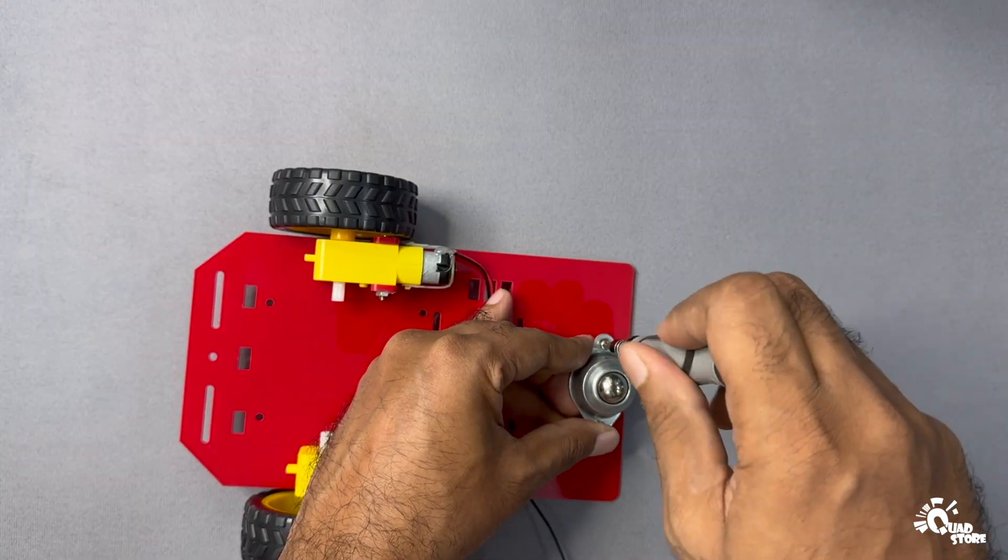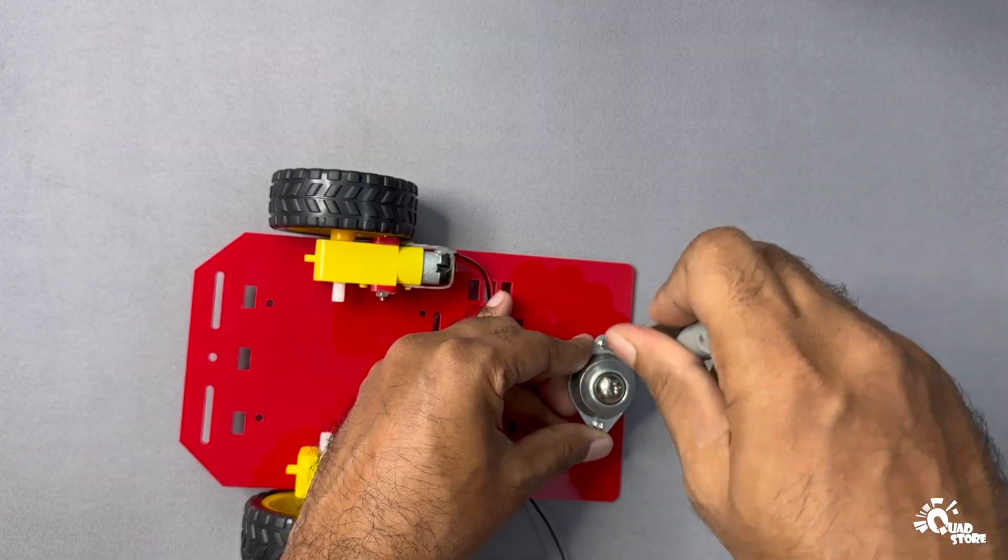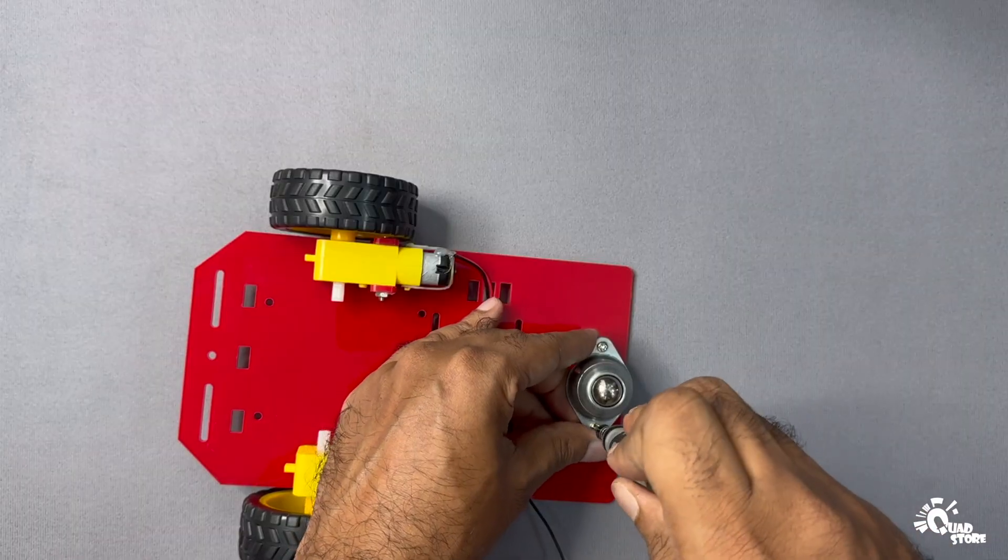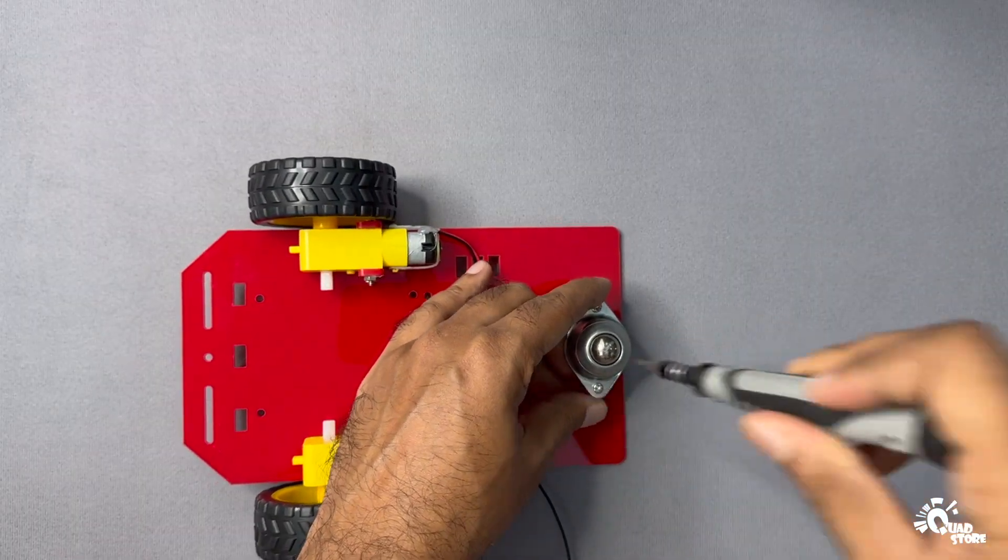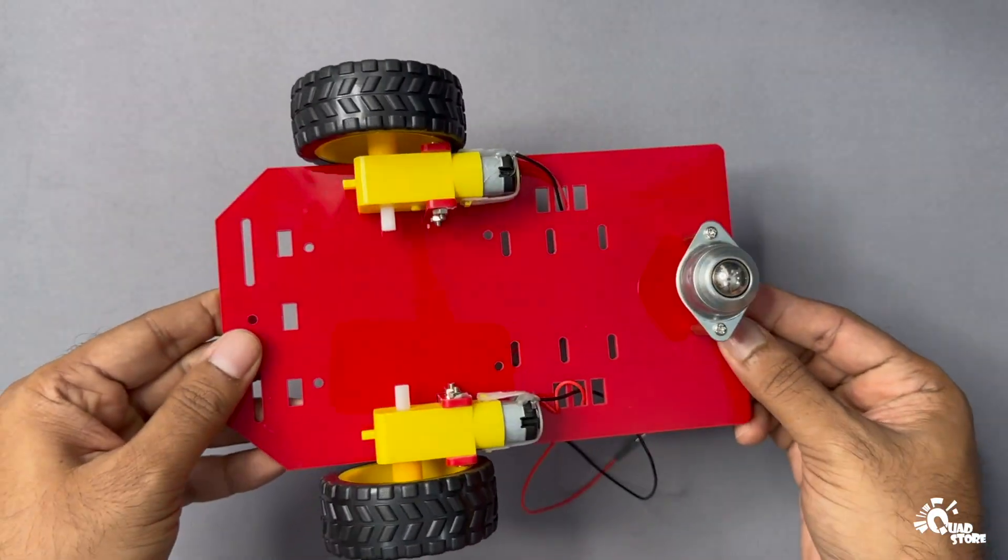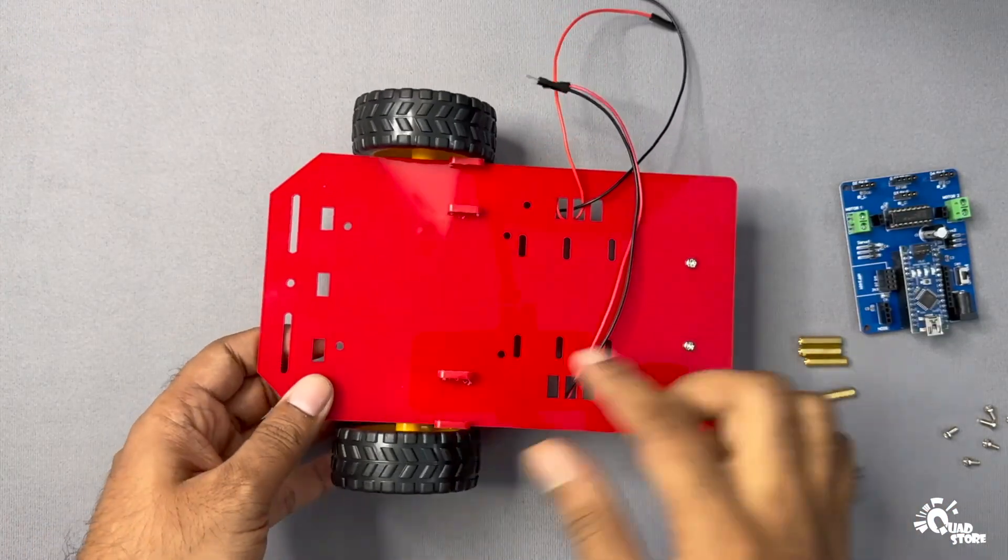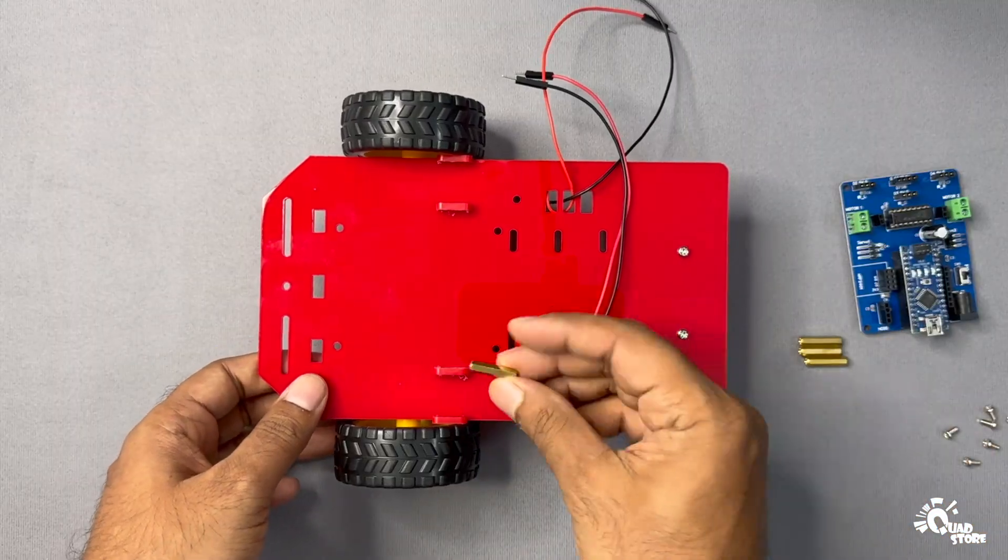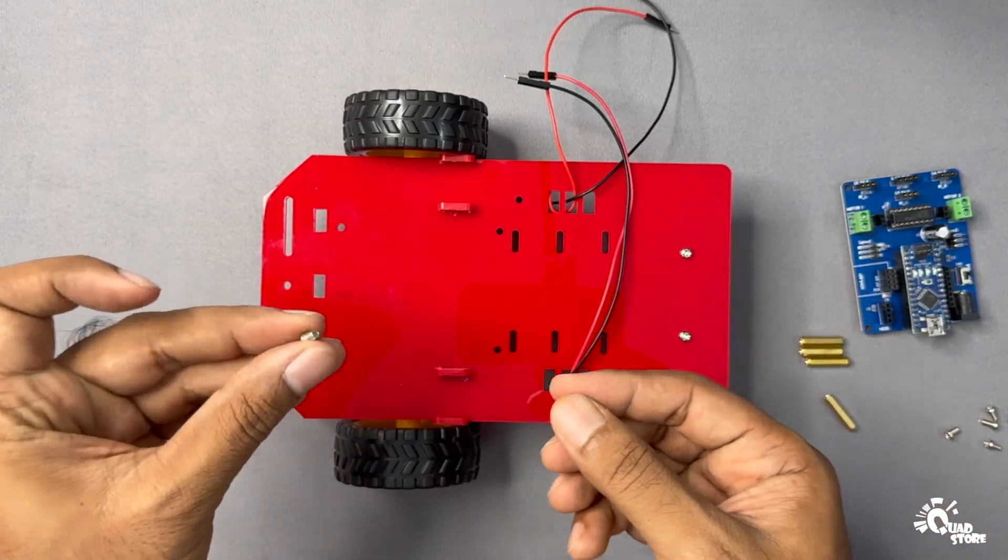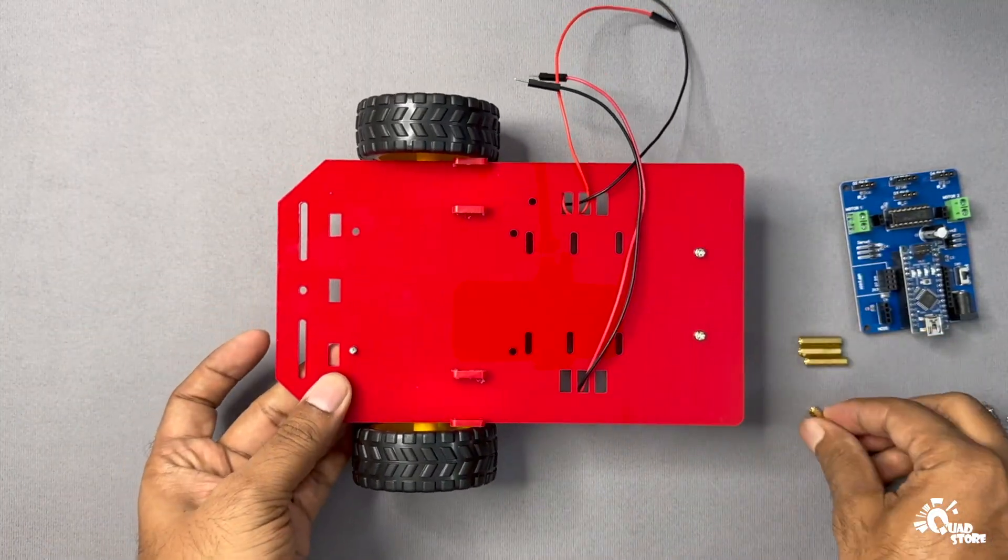You've successfully assembled your 2WD chassis. Now that the 2WD chassis assembly is complete, let's move on to mounting the microcontroller PCB onto the chassis.